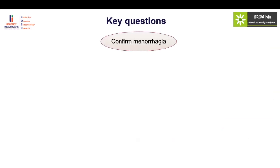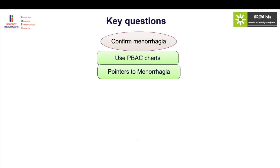Key things to look for in a girl with menorrhagia in the adolescent age group: first, confirm menorrhagia. We generally use the PBAC chart for this. But more importantly, subjective methods of confirming menorrhagia include the pointers — if the girl is missing school due to heavy bleeding, having accidents, missing social functions just because she thinks she cannot manage her periods, she has clots, and has associated anemia. These things should be actively asked in history, because sometimes the girl presenting with anemia will not tell you she has heavy periods.